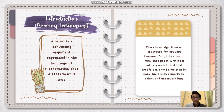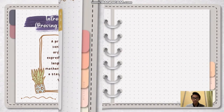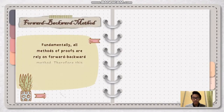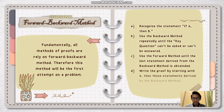Generally, there is no algorithm or procedure for proving theorems. However, it does not mean that proof writing is purely an art, such that only those with exceptional talent and insight can possibly write proofs. Basically, all methods of proofs rely on the forward-backward method. Therefore, this method will be the first attempt on a problem.